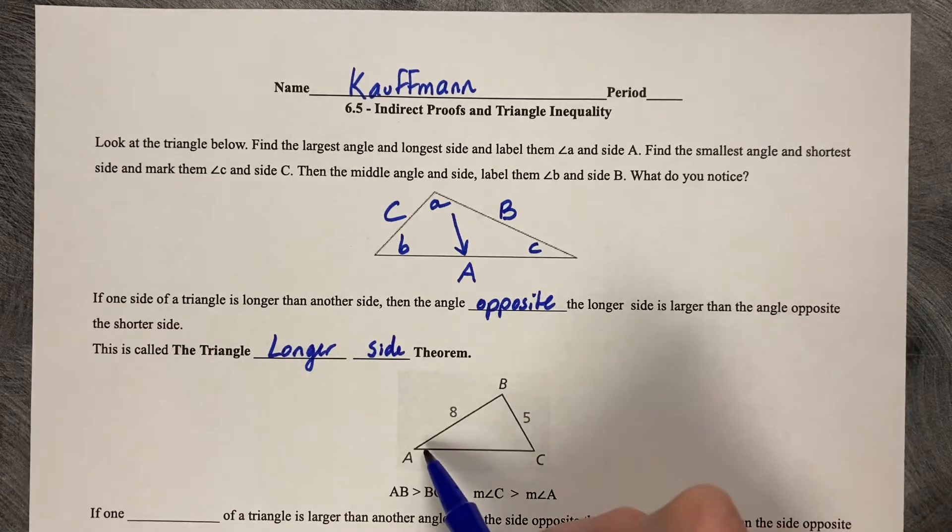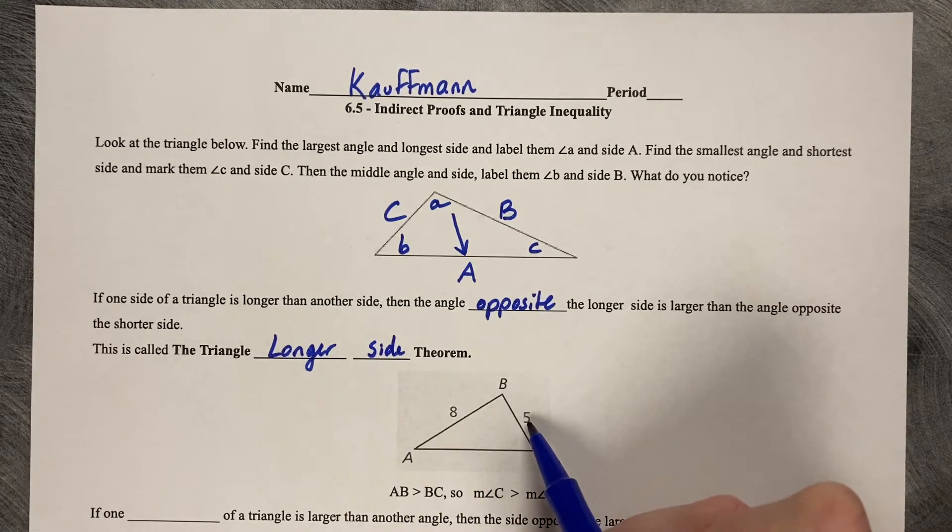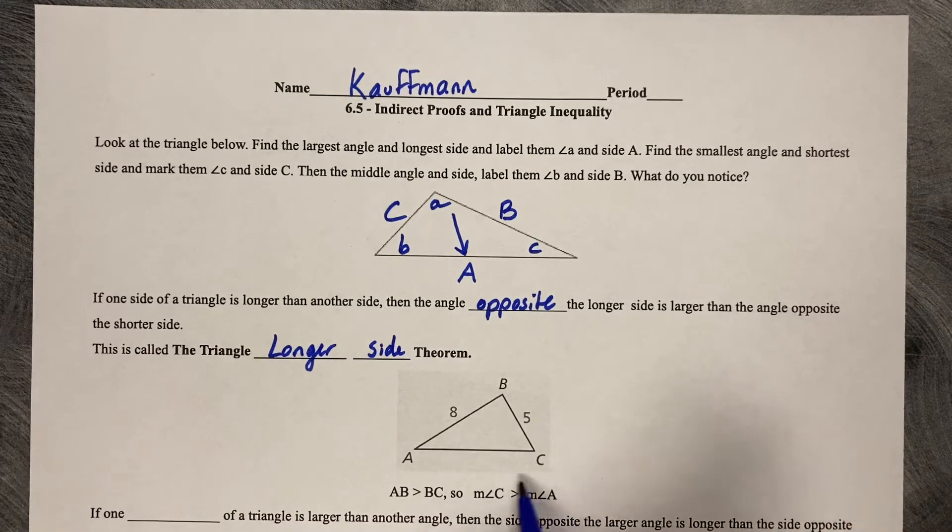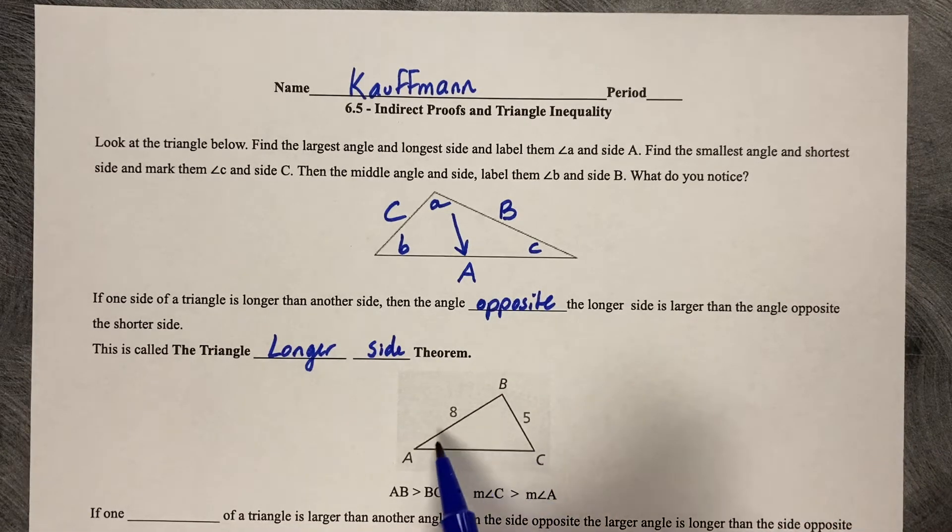This is called the triangle longer side theorem. So that means that if angle A is across from 5 and 8 is across from C, then angle C must be larger than angle A. We don't really know by how much, but we do know that it's larger. So C must be larger than A because 8 is larger than 5.